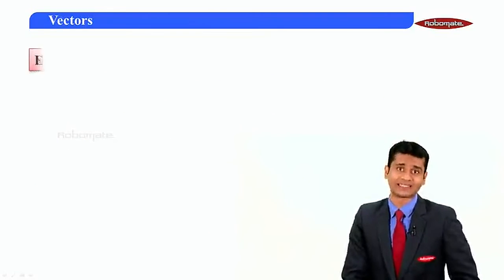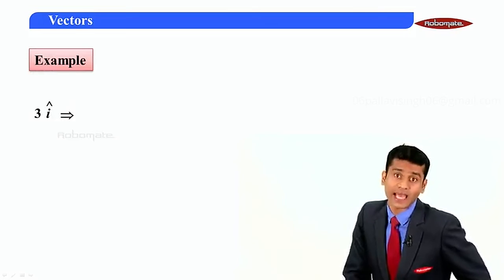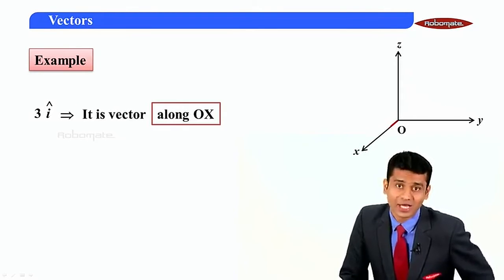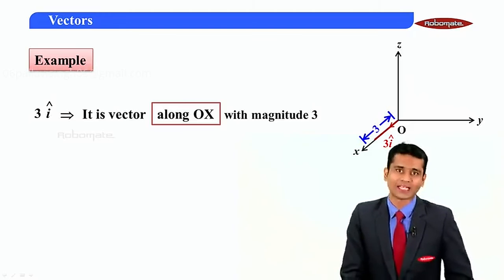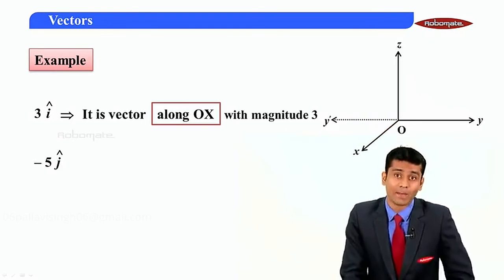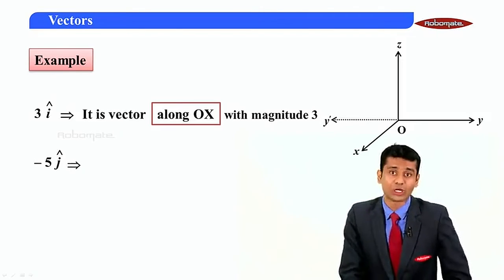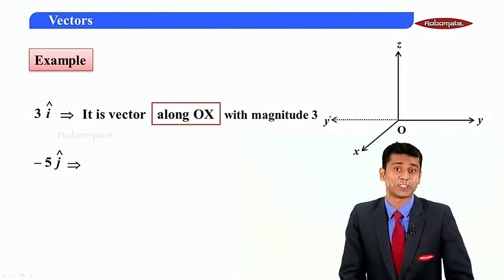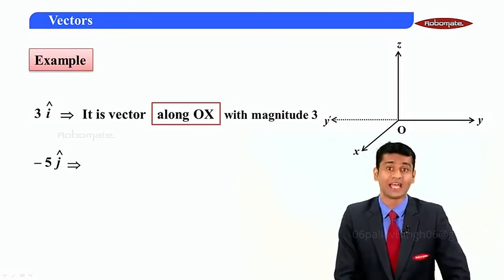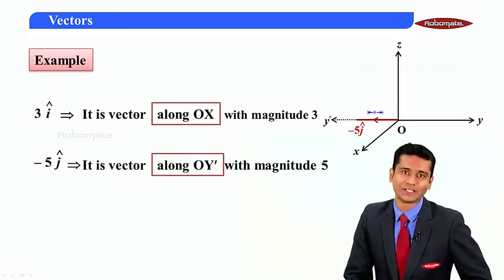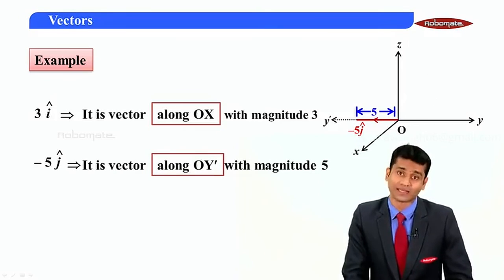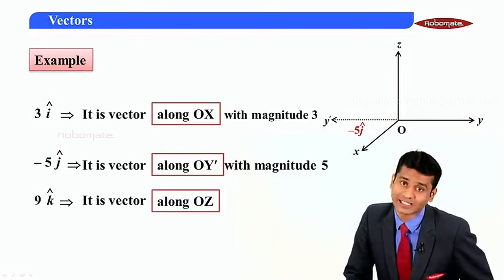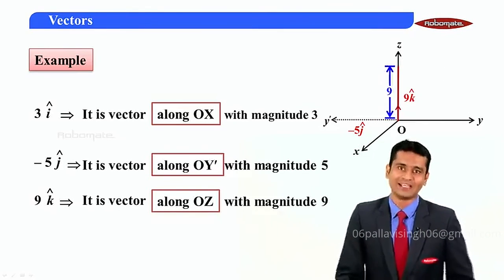Let us take some examples. First: 3·i-cap — it is a scalar multiple of i-cap, so it is along the positive x-axis (OX), with magnitude three. Second: −5·j-cap — it is a scalar multiple of j-cap, but with a minus sign, so it is along the OY-dash axis (opposite to y-axis), with magnitude five. Third: 9·k-cap — it is along the positive z-axis (OZ), with magnitude nine.